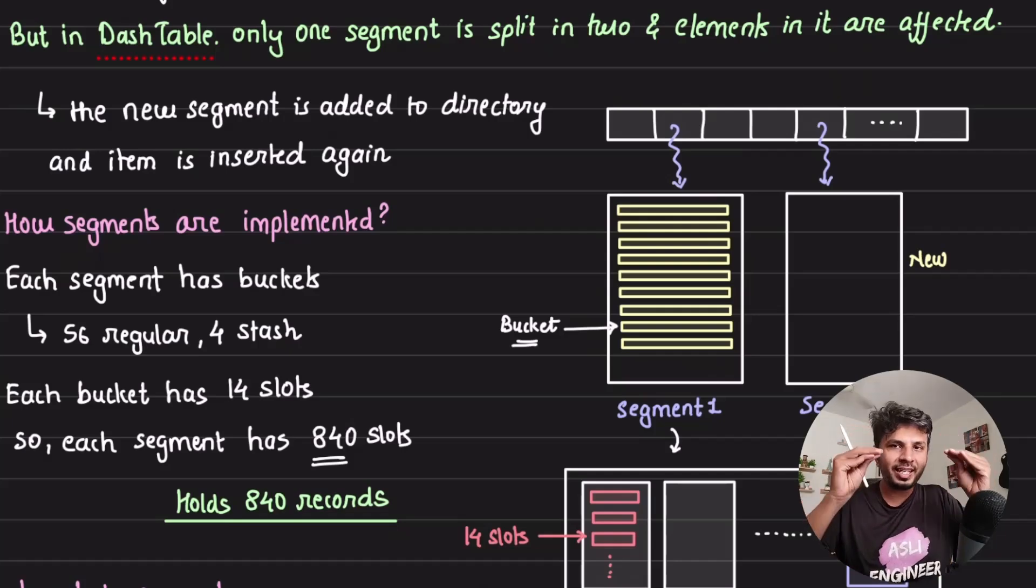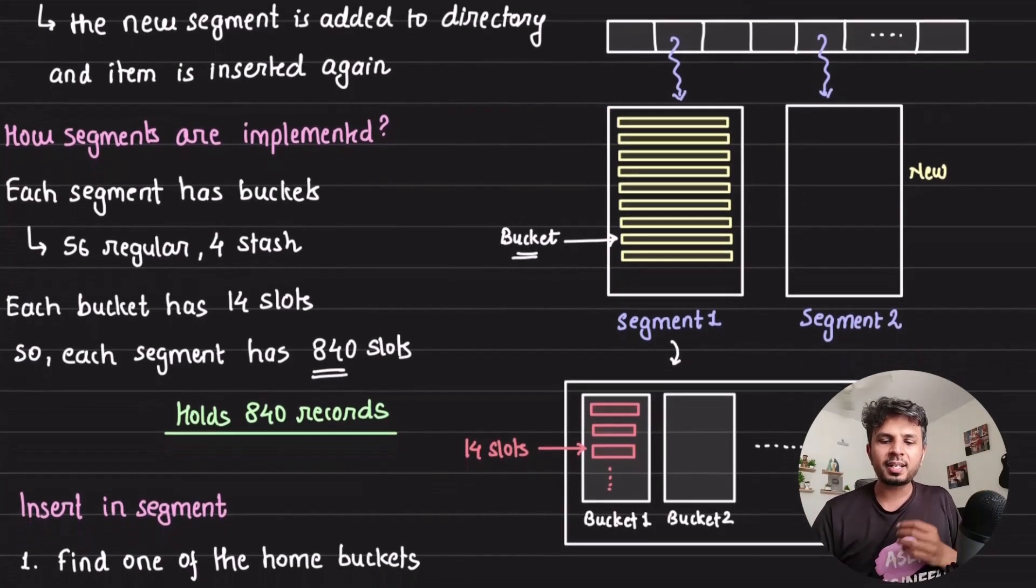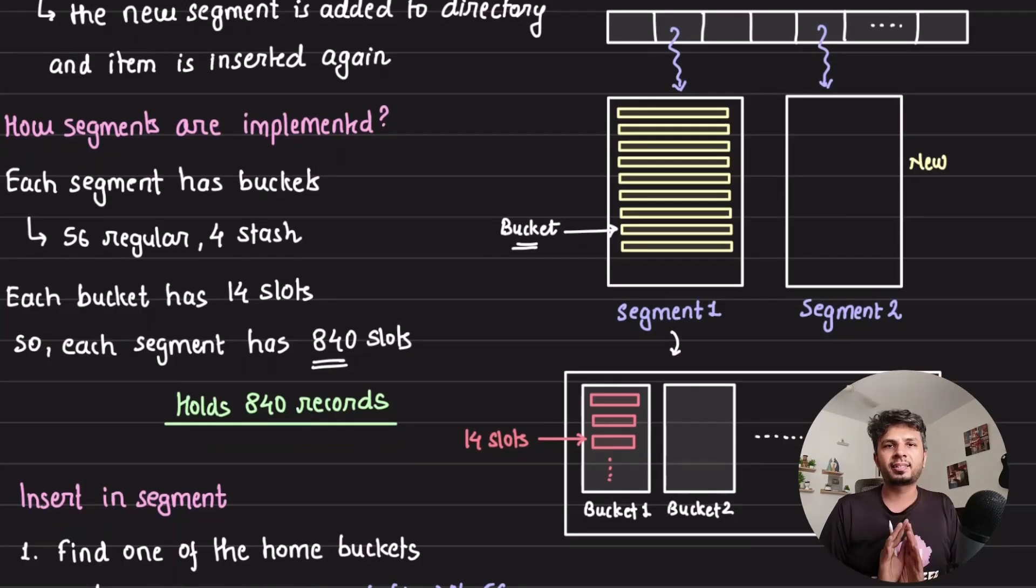How is each segment implemented? Each segment consists of buckets. Each segment has two types of buckets: one is regular bucket, second is stash buckets. 56 regular buckets and four stash buckets.